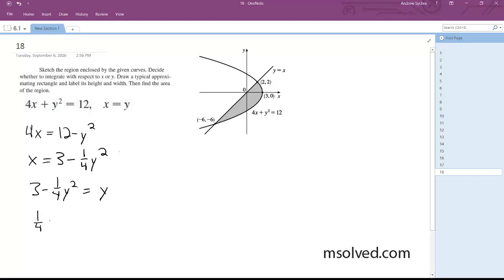1/4 y squared plus y minus 3 equals 0. We factor this out, we get y is equal to negative 6 and 2.